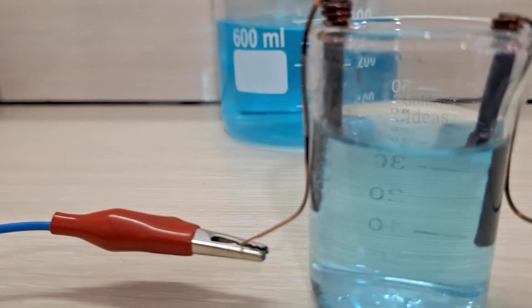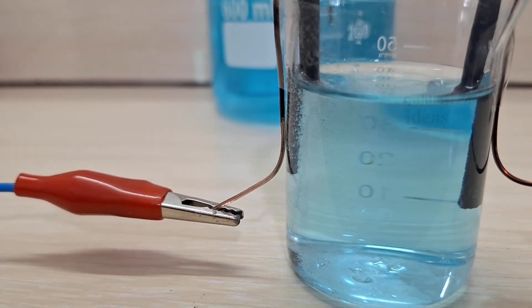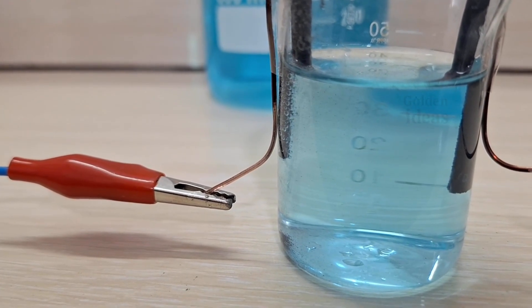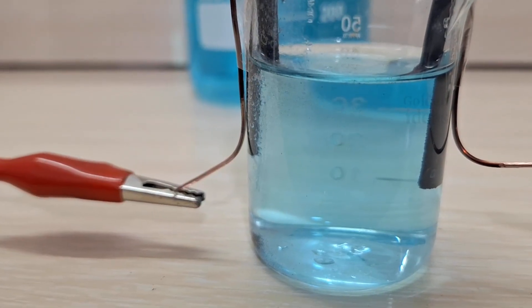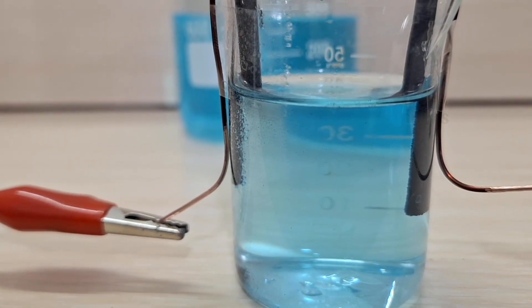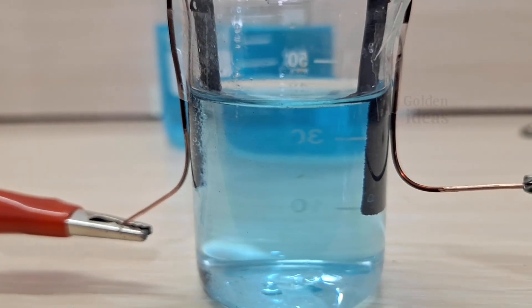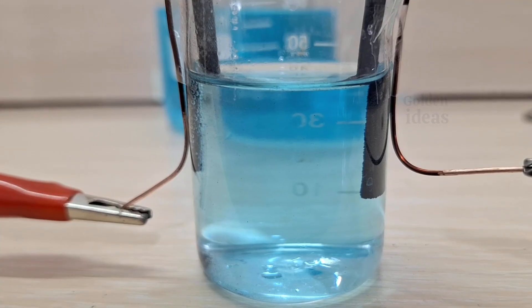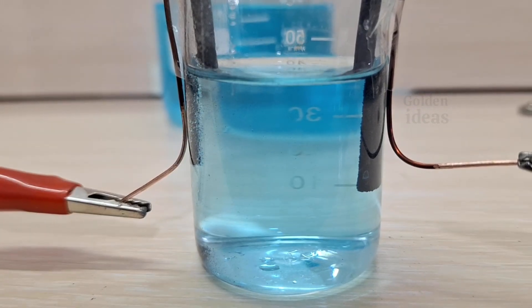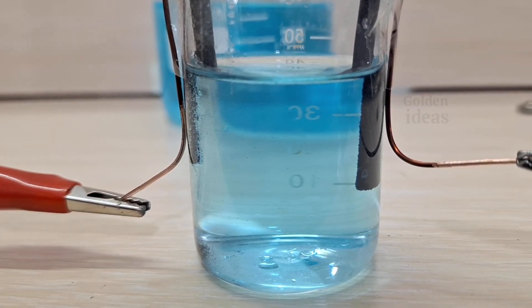Electrolysis of a cyanide solution is similar to that of gold chloride, and if I get the chance, I'll make a separate video about the cyanide process as well. Also, please keep in mind, working with chemicals must always be done in a well ventilated area and with proper safety precautions.